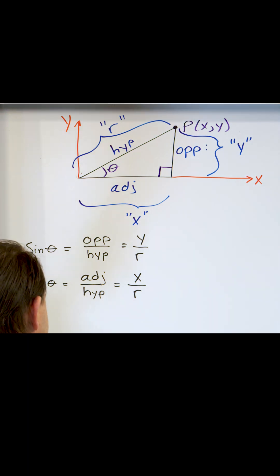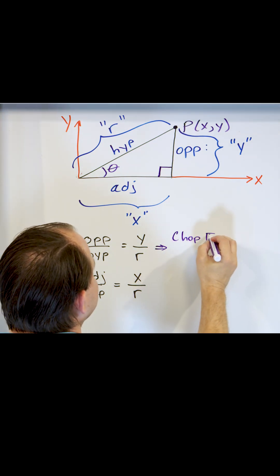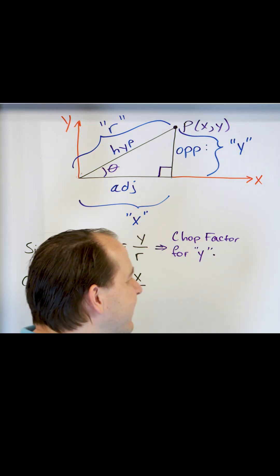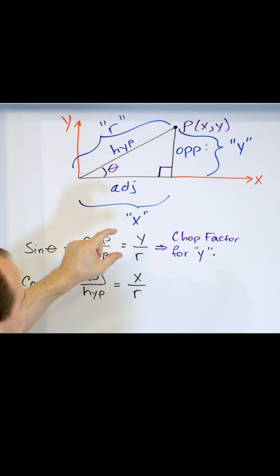And I told you in the last lesson that we called this the chop factor for y. It is literally a decimal that comes out. It's a number less than one.